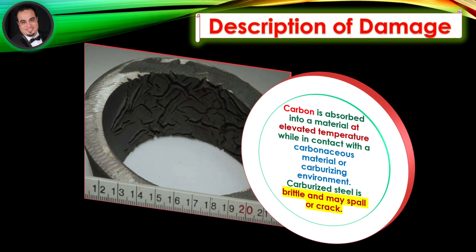Description of Damage: Carbon is absorbed into a material at elevated temperature while in contact with a carbonaceous material or carburizing environment. Carburized steel is brittle and may spall or crack.